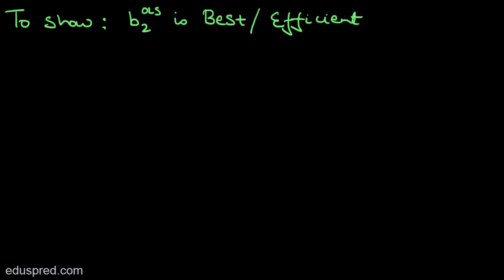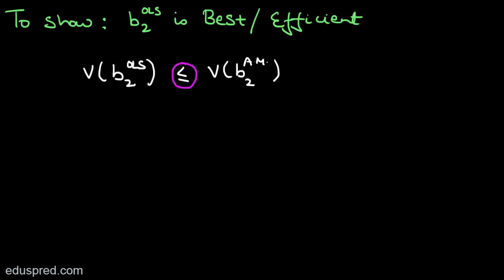To prove that B2 OLS is efficient, we have to show that the variance of B2 OLS is less than or equal to the variance of B2 from any other method. Note that I'm writing less than or equal to, but usually this inequality is strict. If you're wondering why minimum variance is considered a good thing, I suggest you go back to your statistics course and revise the properties of a good estimator.